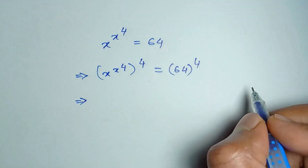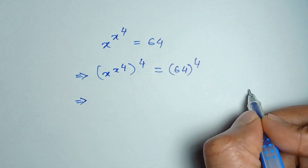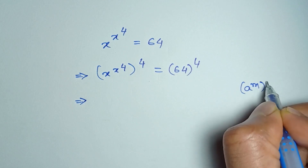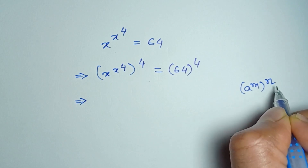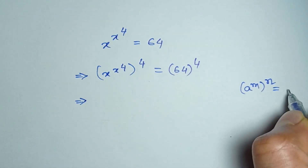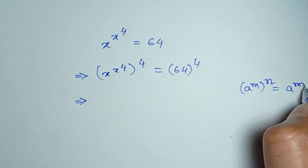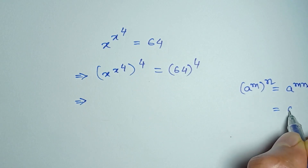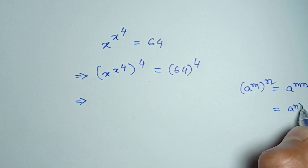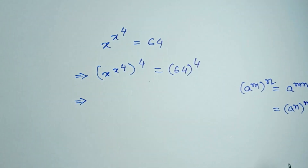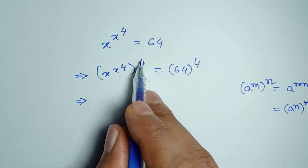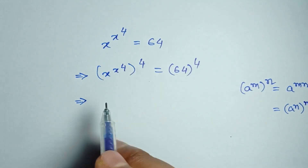We can apply the formula: a to the power m, whole to the power n, is equal to a to the power mn, which is also equal to a to the power n, whole to the power m. So here m is equal to x to the power 4 and n is equal to 4.